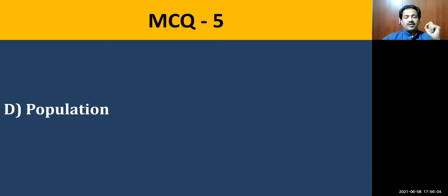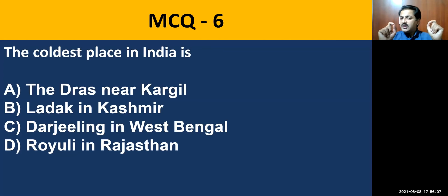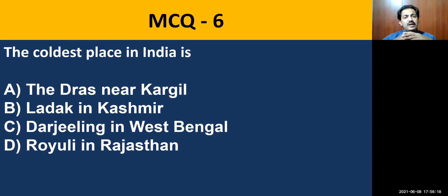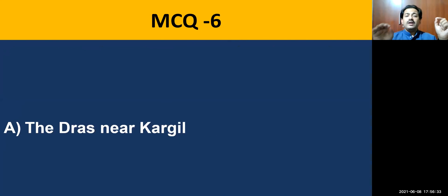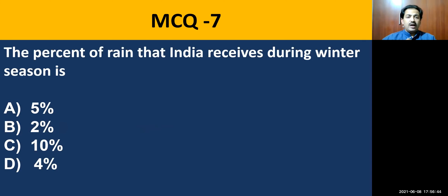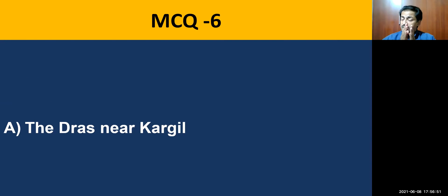Question number six: the coldest place in India is? Among the four options — Dras near Kargil, Ladakh in Kashmir, Darjeeling in West Bengal, and Royalee in Rajasthan — the coldest place recorded is Dras near Kargil. The temperature there goes almost minus 40 to minus 50 or 55 degrees Celsius.